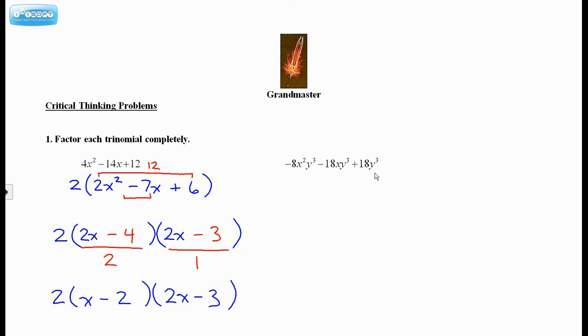All right, this one looks like a big mess, but notice how each term contains a y cubed. So that could be factored out. That's nice. And I have an x squared, an x, and no x's here. So this is my leading coefficient here, this negative 8. Oh, it's negative. I'd want to factor that out too. But I can't factor out the 8, darn it, because 8 is not a factor of 18.